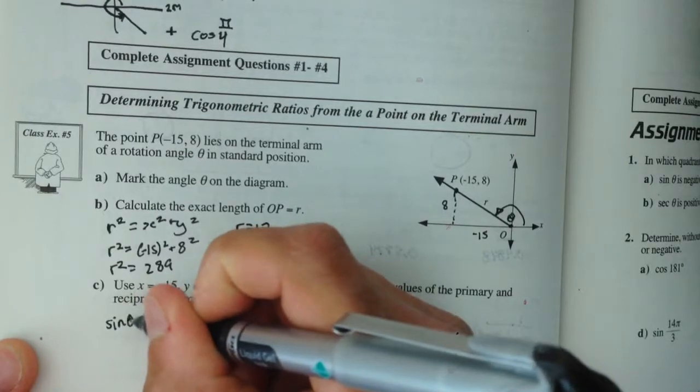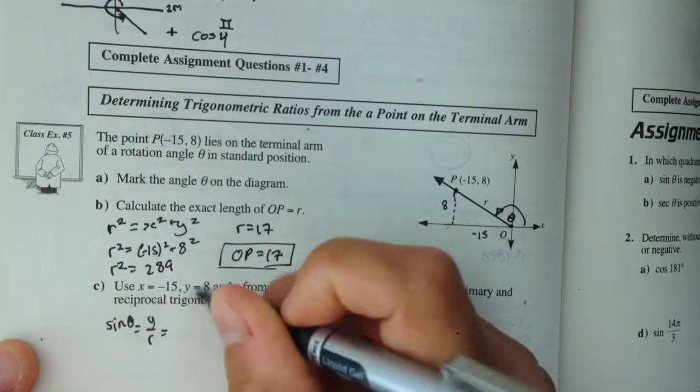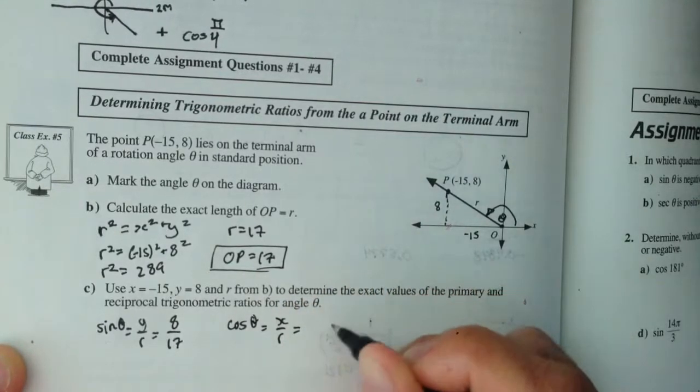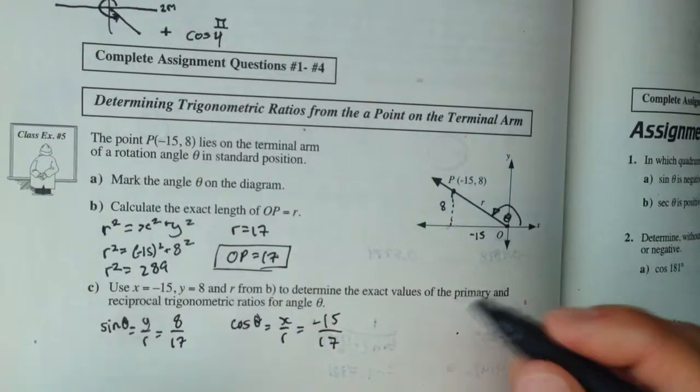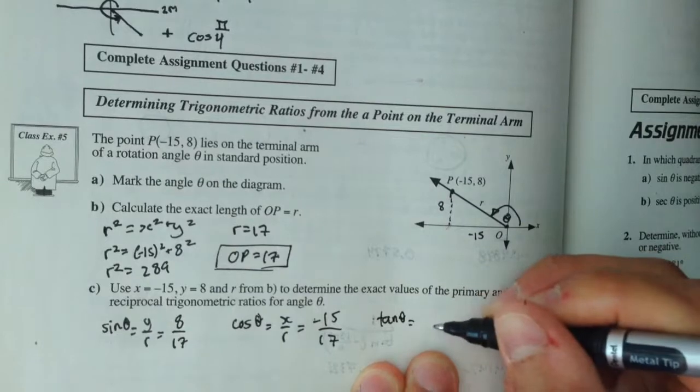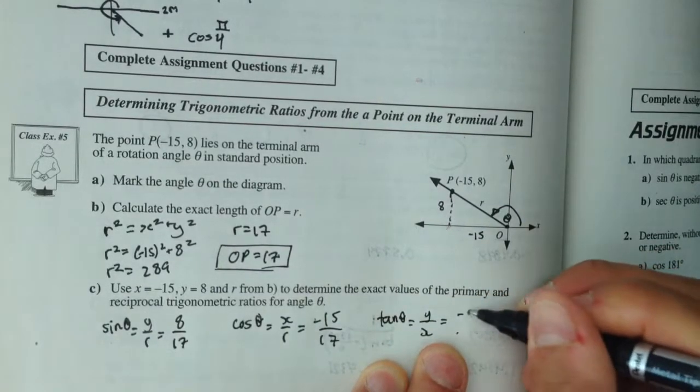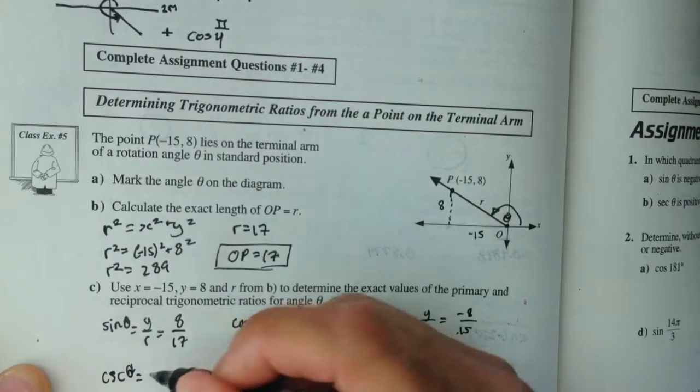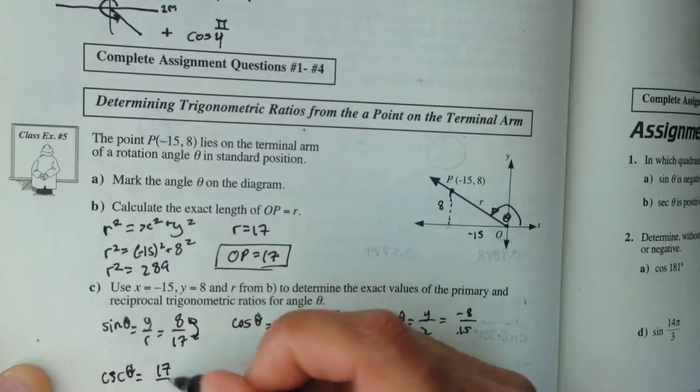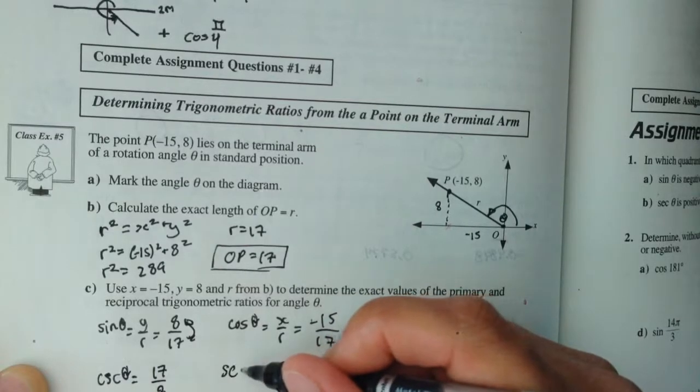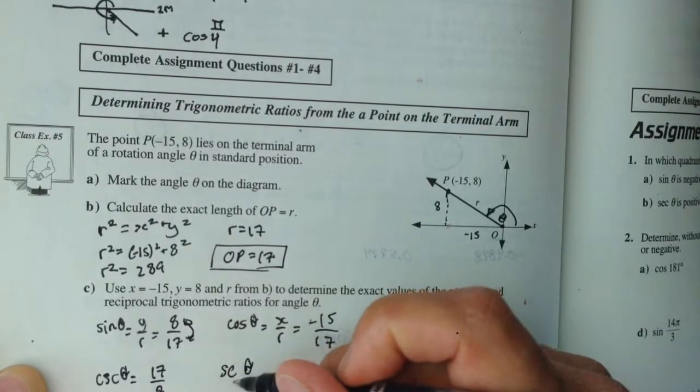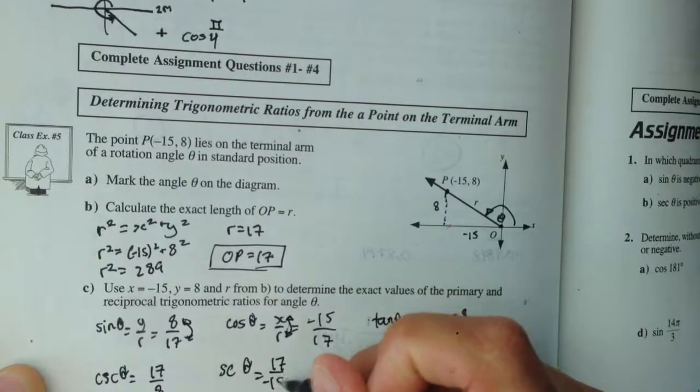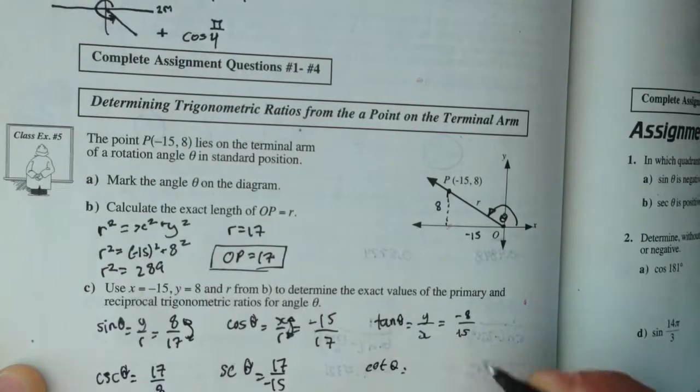Next thing we're going to do is use x equals negative 15, y equals 8, and r which is equal to 17, to determine the exact values of the primary and reciprocal trig ratios for my angle theta. Sine theta is equal to y over r, so 8 over 17. Cosine theta is x over r, so that is equal to negative 15 over 17. Tangent theta, opposite over adjacent, or y over x is equal to negative 8 over 15. If we're thinking about the cosecant theta, that's the reciprocal of sine, so that's going to be 17 over 8. The secant of theta is r over x, that's going to be 17 over negative 15. And my cotangent ratio is the opposite of tangent, so it's going to be 15 over negative 8.